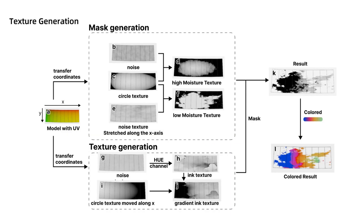In texture generation, we've automated the process by integrating the model's UV mapping. This involves two main steps: creating a contour mask and generating internal textures. We blend circular gradients with various noise textures to produce different grayscale images. These images are then mapped to gradient colors, resulting in the final visual effect.